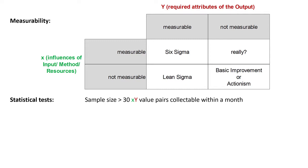If influences and problems can be measured, it is also necessary that a sample of at least 30 XY value pairs can be drawn within one month to be able to obtain relevant and significant results from statistical tests. This means that the process must have a certain repetition rate and at least one output should be generated daily. I remember the production of an online catalogue that was updated quarterly. Of course, you can also measure different output attributes and influences in this process. However, it would have taken several years to obtain a sufficiently large sample for the statistical tests. And the use of statistical tests is essential for our Six Sigma certification project.